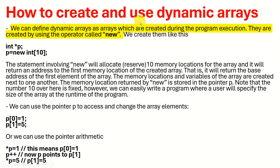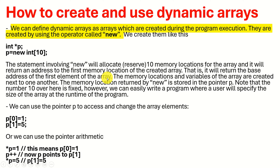We can define dynamic arrays as arrays which are created during the program execution. They are created by using the operator called new. We create them like this: first, we create a pointer, and then we write p = new int[10]. This statement involving new will allocate 10 memory locations for our array and will return an address to the first memory location — that is, the base address of the first element. The memory locations of the array are created next to one another, and this address is stored in the pointer p.